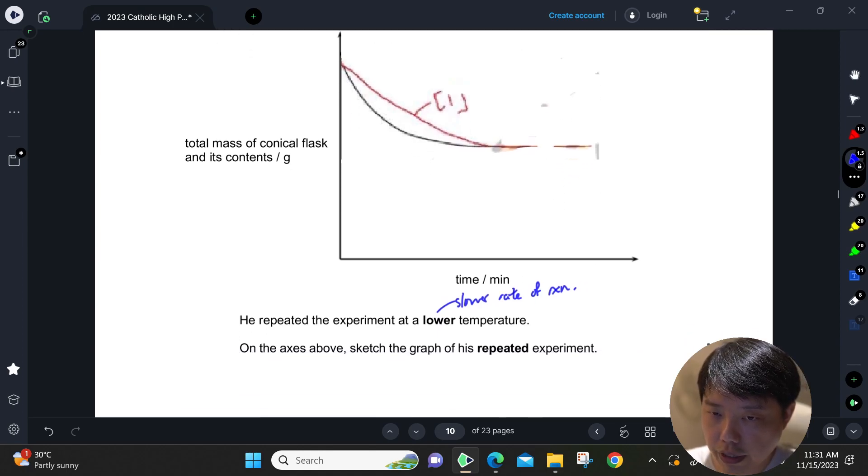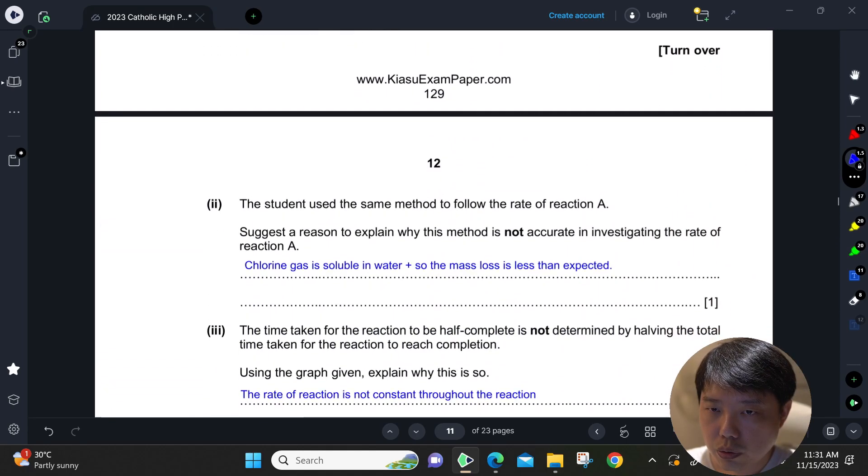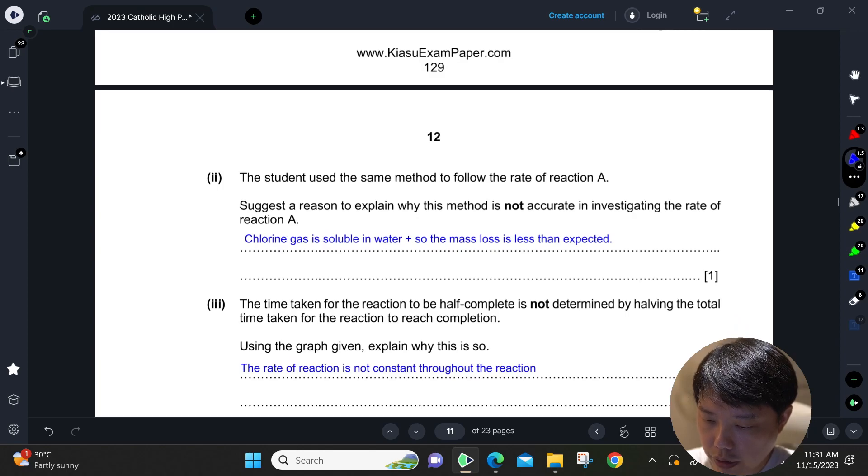So just take note of that. Then, use the same method to follow the rate of Reaction A. Suggest why this method is not accurate in investigating the rate of Reaction A.